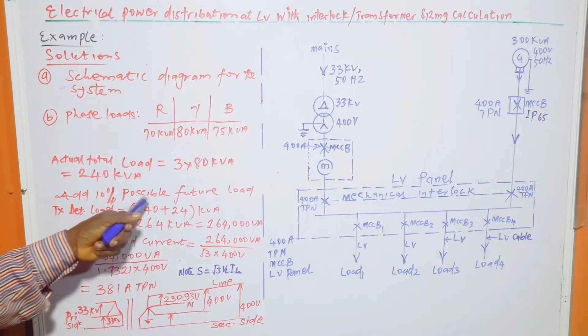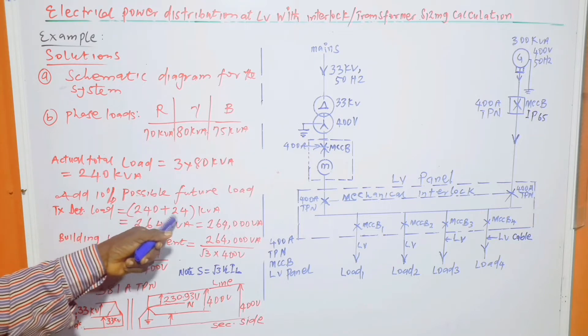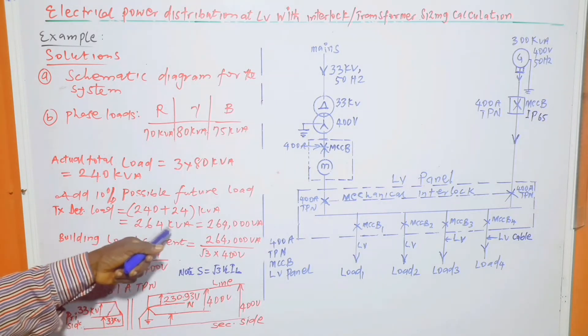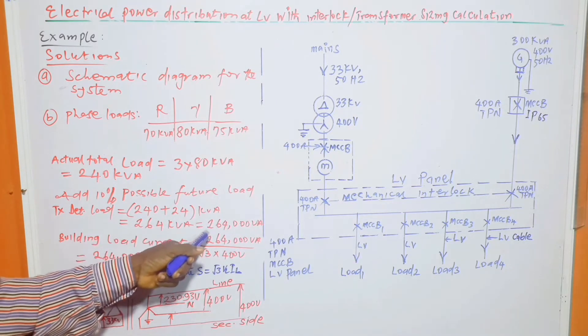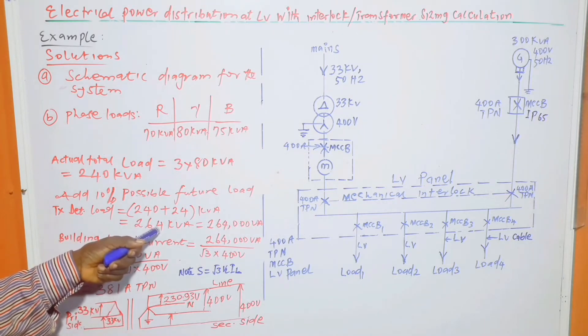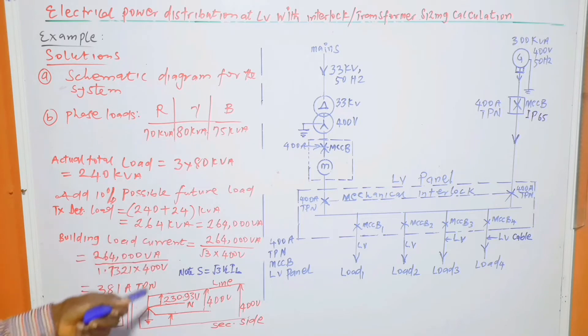Now, add 10% possible future load. Then transformer rating determining load is equal to 240 plus 24 kVA, which is equal to 264 kVA or 264,000 VA. This is the building load, 264 kVA, which is the answer to the B part.